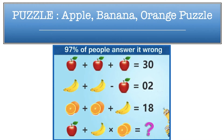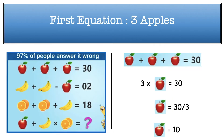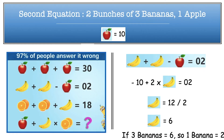I enjoyed solving the puzzle, hope you all also enjoyed it. Let's see what the correct answer is. In the first equation we have got three apples whose sum is equal to 30, so 3 times apple equals 30, meaning one apple is equal to 10.